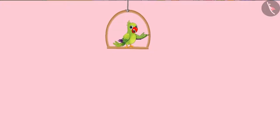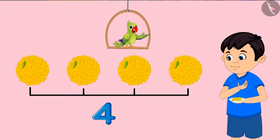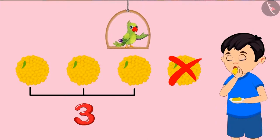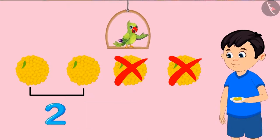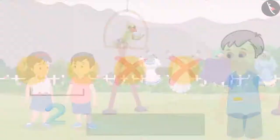So, children, first Chotu had four laddus with him. Then he ate one, so there were three left. But then, out of the three laddus, he ate one more laddu. So, then there were just two laddus left with him. In this way, the number of laddus kept decreasing.